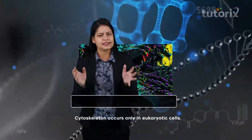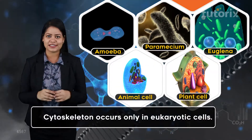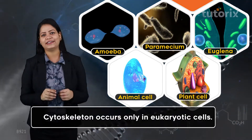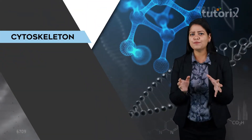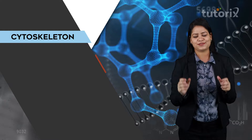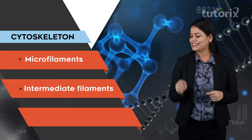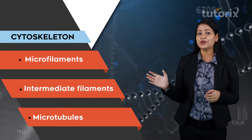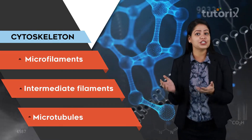The cytoskeleton is found only in eukaryotic cells — all prokaryotic cells lack the cytoskeleton. The cytoskeleton is composed of three components: the microfilaments, the intermediate filaments, and the microtubules. All three components differ in their individual structures and properties.